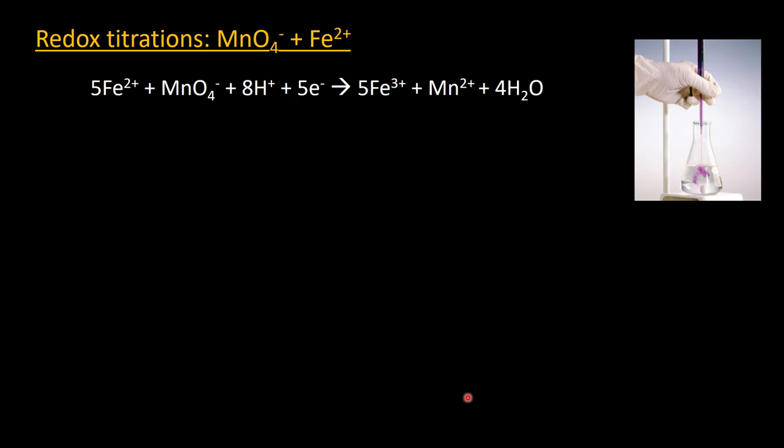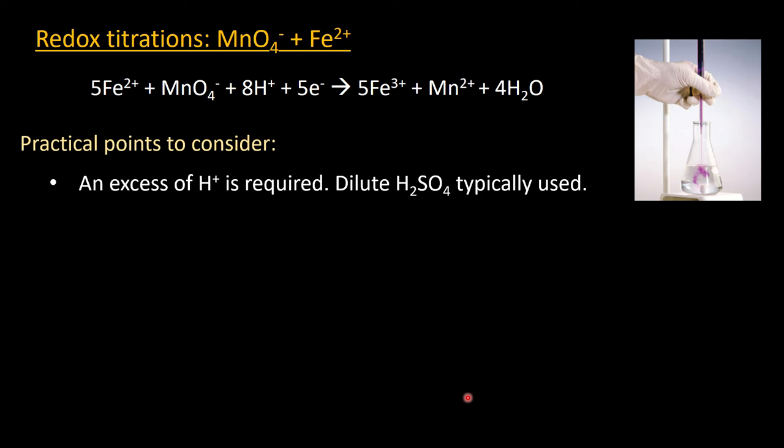A couple of practical considerations before we do a practice question. An excess of H+ has to be there. It's not an acid-base titration. A pH indicator would just show it's strongly acidic, and the acidity would go down slightly as the reaction continued because H+ would be being used up. But you really need a good excess of H+ there, because otherwise we're talking about really slow rates of reaction. We'd normally make up one of our solutions, and typically it would be whatever ends up in the conical flask, in sulfuric acid. Rather than dissolving any solids or diluting any solutions in just water, we'll dilute it in aqueous acid, so one molar or half molar sulfuric. Make sure there's an abundance of H+, so there's more than enough present.